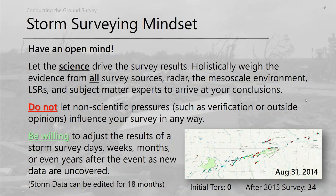A great example: after a QLCS event on August 31st, 2014 in central Iowa, the day after we had zero tornadoes reported, and that's the way it stayed for a while. Finally, after an aerial survey, we discovered 34 tornadoes — and there were actually more damage paths we had to sift through to determine which were tornadoes. That's an example of adjusting the survey and keeping an open mind.